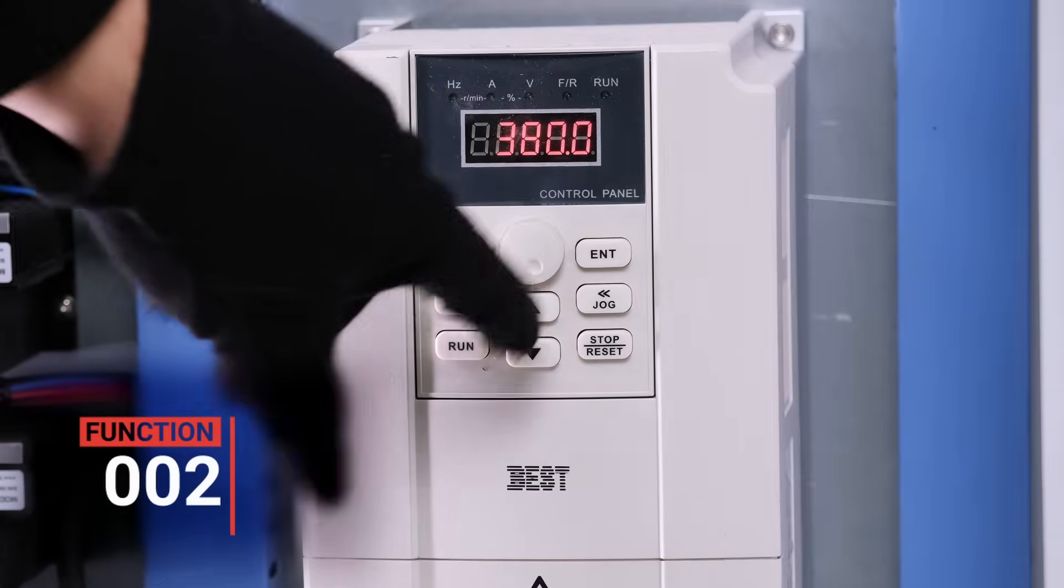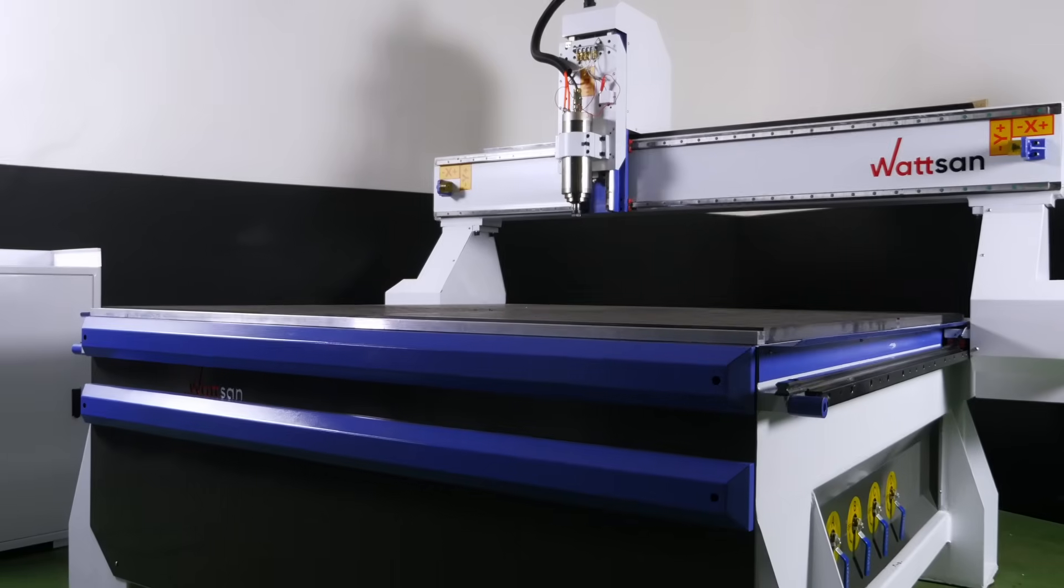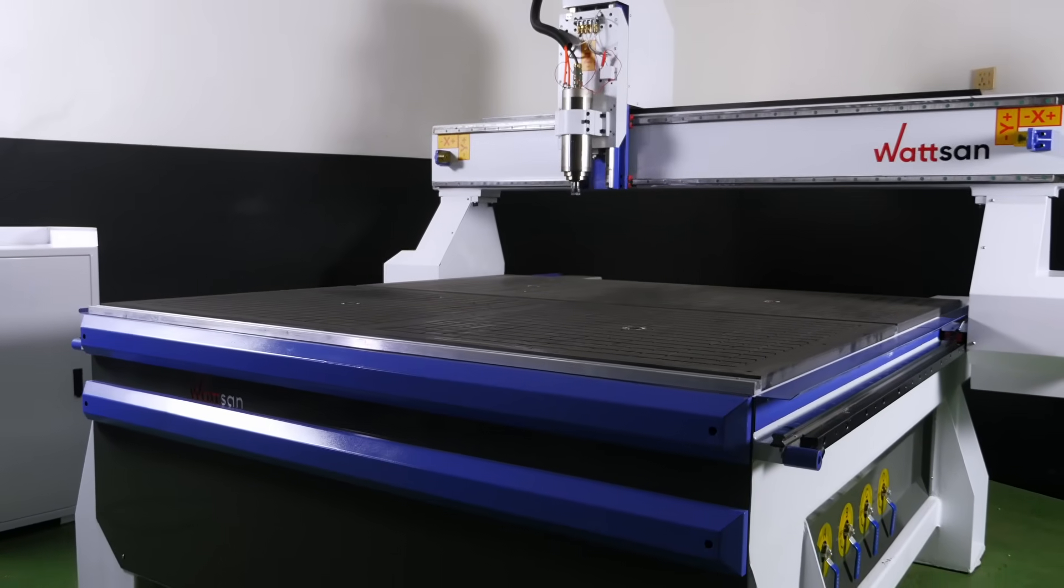Function 2. This is spindle voltage. There are two variants, 220 or 380. Again, you need to choose based on the model installed on your machine.